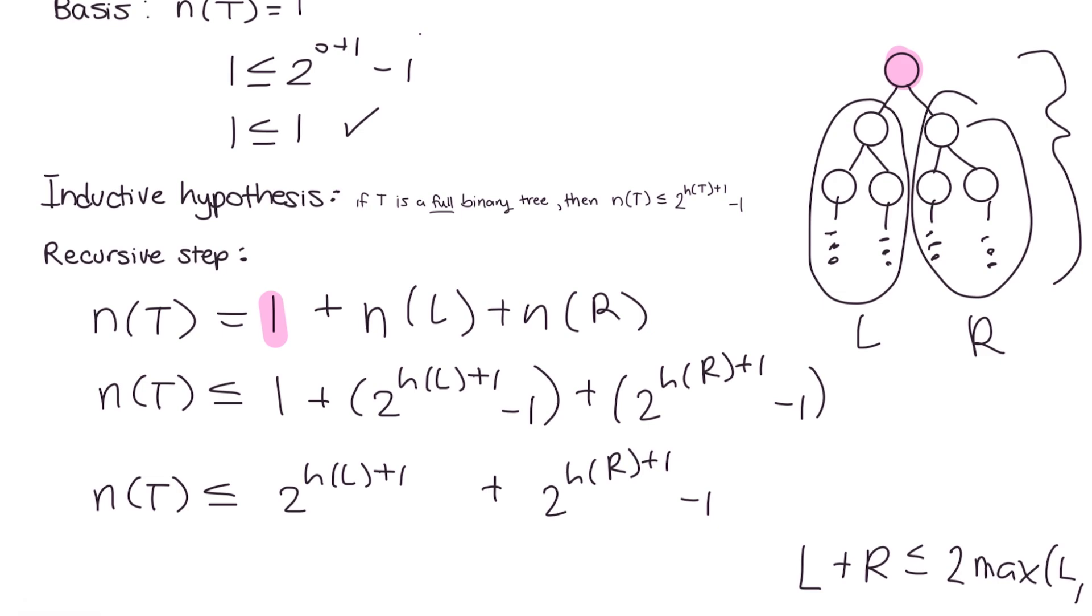And, just think about why this is true. Technically, the left and the right could be different sizes. Like, the left could only have one node and then the right could have 100. And, so, we know that the total amount of nodes has to be—if we did the max of one of these and we multiplied it by 2, then we know it has to be greater than. And, technically, it could be equal if they're both the same size, but that's one way we can do that because we're working with inequalities in this proof.